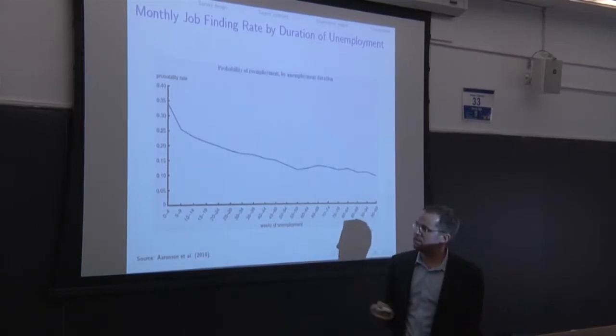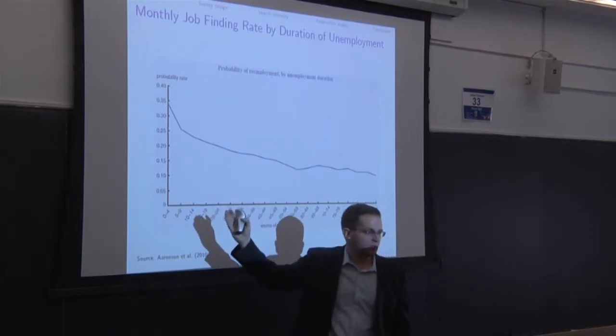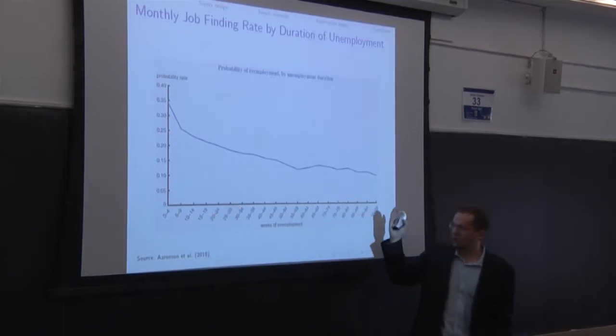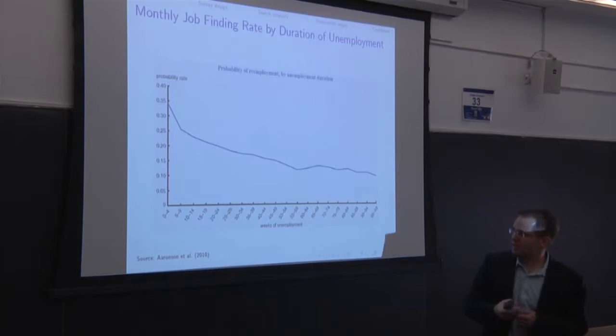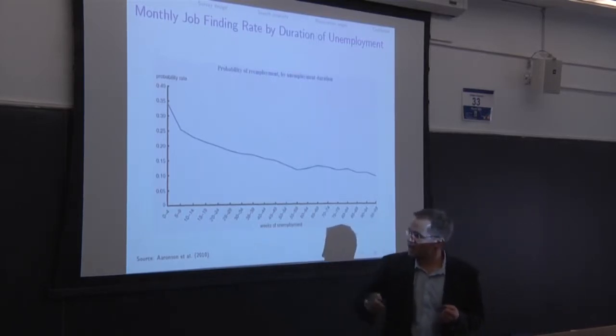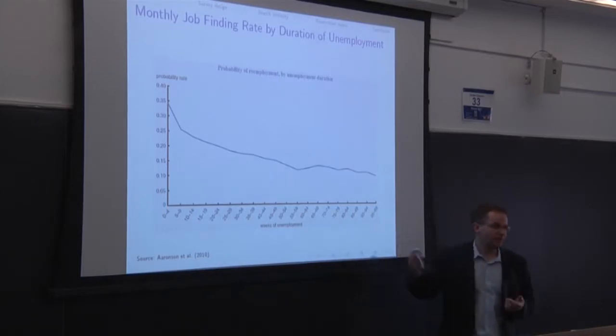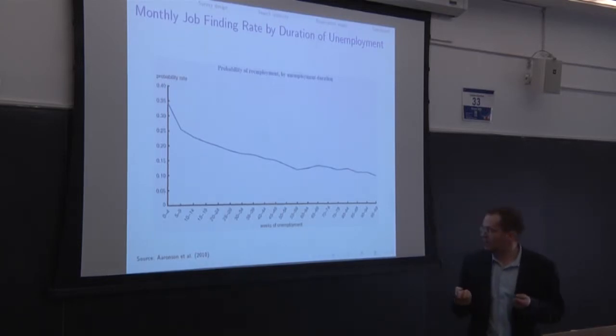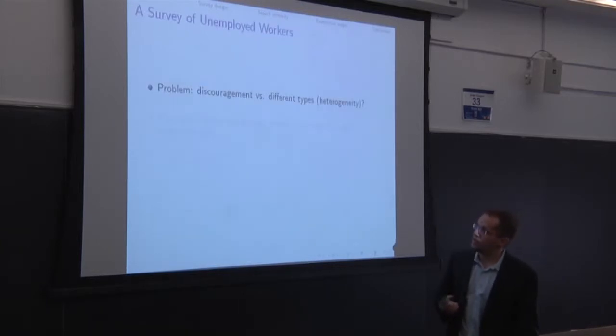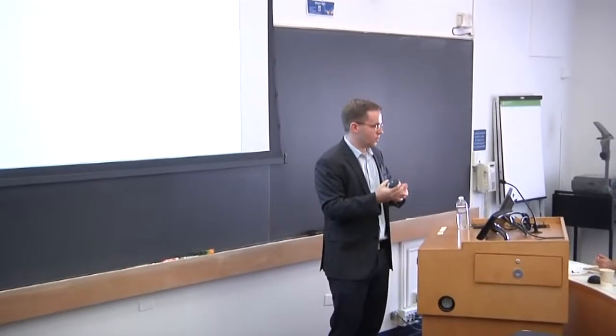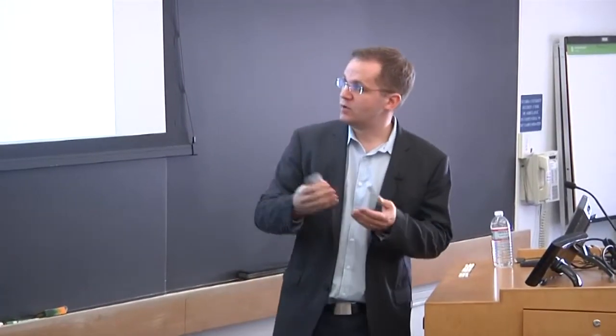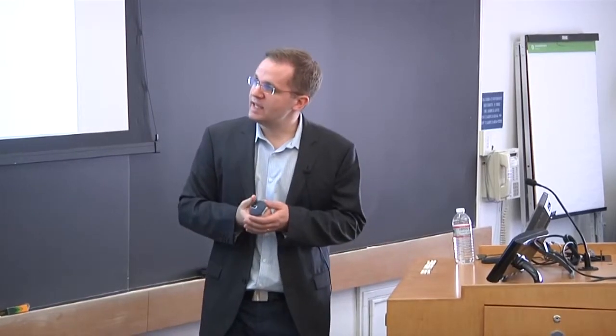So the question is, is this evidence in favor of discouragement? People getting discouraged, search less, the longer they're unemployed. Now some people say it's less clear because it could be that people that find jobs here, they're fundamentally different than people that are unemployed here. So you can think of two types of workers. Maybe there's a high type that is very effective in searching, is a high ability worker. He finds jobs very fast, and the low types, they've failed to find jobs, they're just intrinsically different. They don't necessarily get discouraged, but they're just of a different type. So there's this tension or this problem in this literature. It's really hard to infer from this graph whether it's true discouragement or whether there are different types of unemployed workers that could lead to that kind of picture.